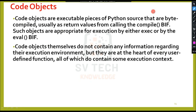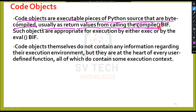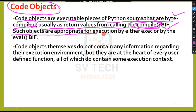First of all, code objects. Code objects are executable pieces of Python source that are byte compiled, usually as returned values from calling the compile function. Code objects work with the compile function, which is a built-in function of Python. Such objects are appropriate for execution by either exec or by the eval built-in function.